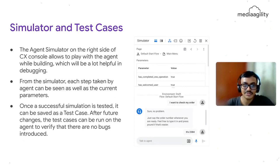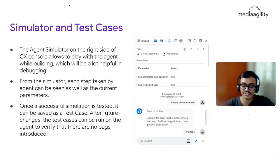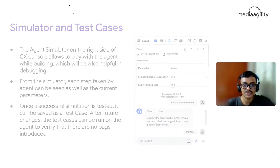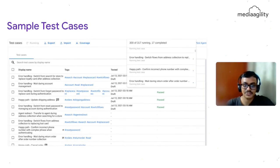The simulator is similar to the Dialogflow ES simulator, but here you can simulate what is happening and save it as a test case. Test cases work the same as in software engineering — whenever you make a change later, those test cases are evaluated, and whatever fails you need to fix. You can also configure automated test cases to run whenever a change is made.